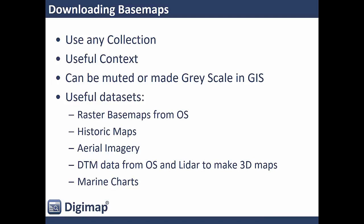Useful datasets include basically any raster base maps from the Ordnance Survey data download collection — the most detailed, largest-scale data is at the top, decreasing down to the smallest scale. Historic maps at various scales and dates are scanned rasters, good for slipping behind your data to see if anything in the past contributed to your findings. Aerial imagery is always useful to show what was there at the time, DTM and OS or LiDAR data is great for 3D maps, and marine charts are a really good backdrop in coastal areas.